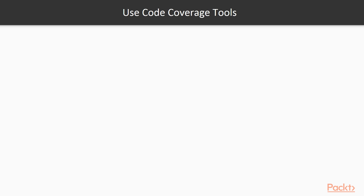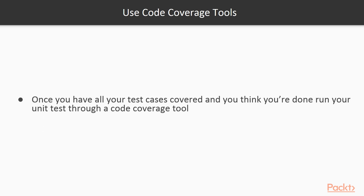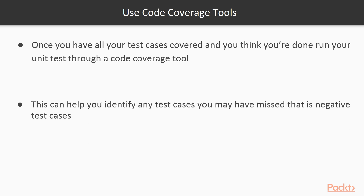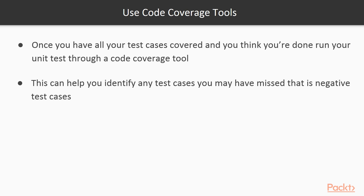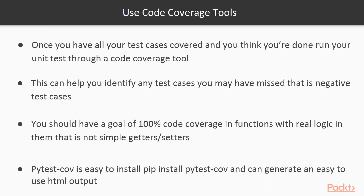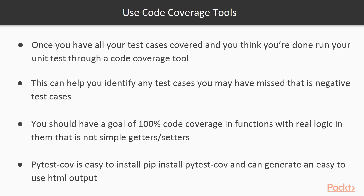Use code coverage analysis tools. Once you've implemented all your test cases, go back and run your unit tests through a code coverage tool. It can be surprising some of the areas of your code you'll miss, especially negative test cases. You should have a goal of 100% code coverage on functions with real logic. Don't waste your time on one-line getter and setter functions. pytest-cov is easy to install with pip install pytest-cov, and it can generate an easy-to-use HTML output.